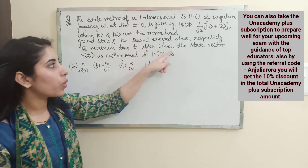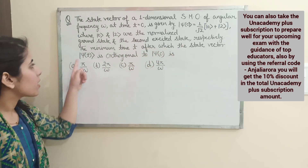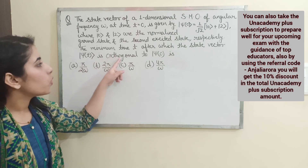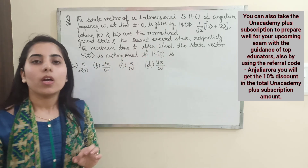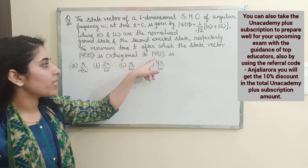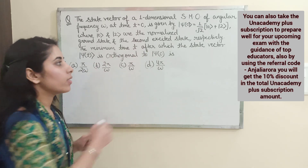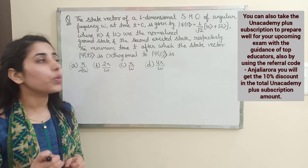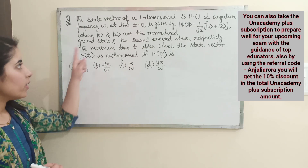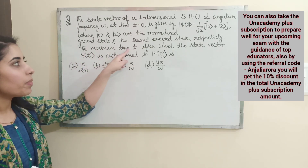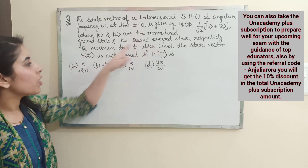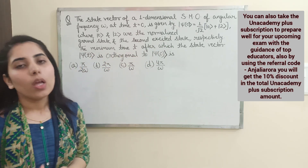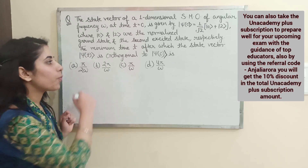After defining the states, the question asks for the minimum time t after which the state vector |ψ(t)⟩ is orthogonal to |ψ(0)⟩, the state vector at time t = 0. So we need to find the minimum time t at which |ψ(t)⟩ will be orthogonal to |ψ(0)⟩.